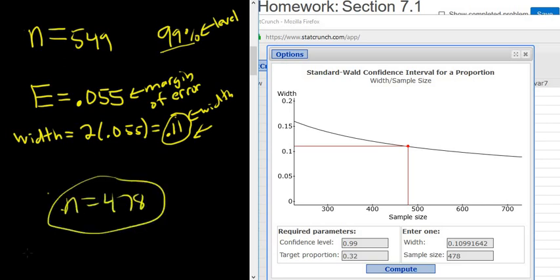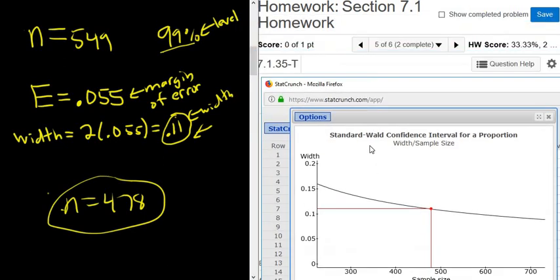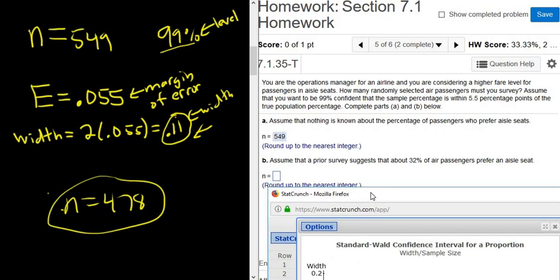So it changed. It reduced the sample size slightly. So again, in the first part, you don't know anything about the percentage of passengers who prefer aisle seats. So you assume there is a 50-50 chance that they prefer an aisle seat. So you leave the target proportion at 0.5. In part B, we know it's 32%, so we change it.